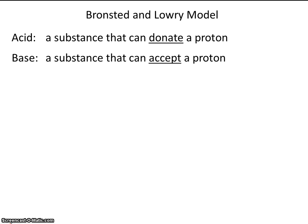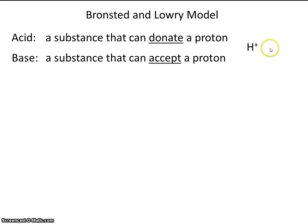Let's first make sure we know what a proton is. The proton is located in the nucleus of an atom, and it has a positive charge. If you look at the periodic table, you discover that hydrogen has one proton and one electron. So if hydrogen loses its electron, it becomes a hydrogen ion — and the only thing left is just its proton. One way that we show a proton is like this, as the hydrogen ion.